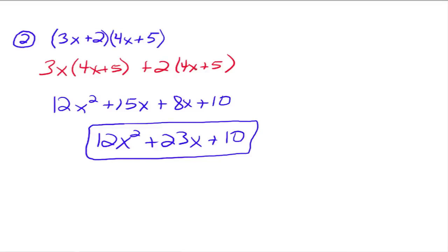Really, what we're going to end up doing is: 3x times 4x gives us 12x squared, and then 3x times 5 gives us 15x. Then we go back and take the second term, the 2, and distribute it through — so 2 times 4x gives you 8x, and 2 times 5 gives you 10. That's really how we're going to think about it when we multiply these things together.